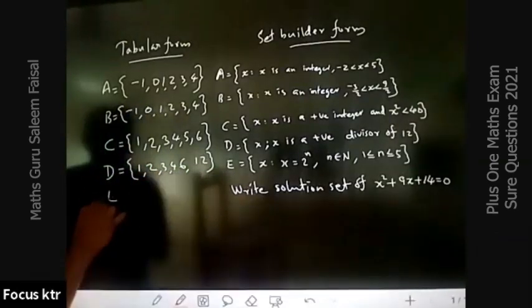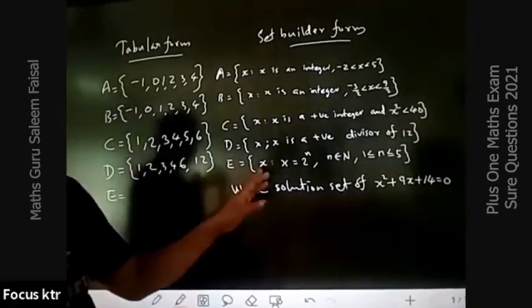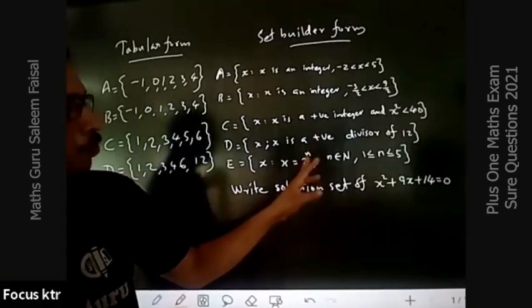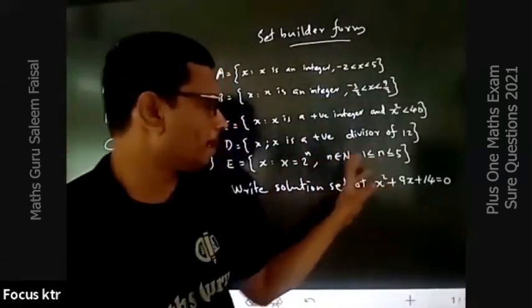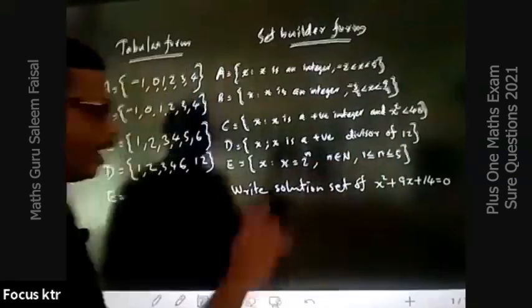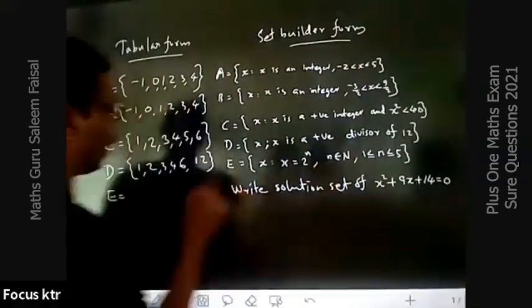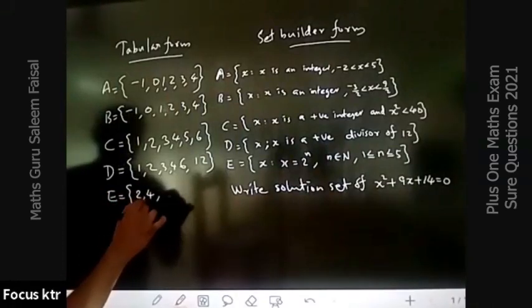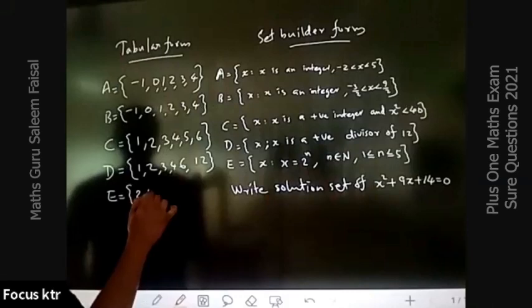E, set of all x such that x is equal to 2 to the power of n, n is a natural number. That's 2 raised to 1, which is 2. 2 raised to 2, which is 4. 2 raised to 3, which is 8.